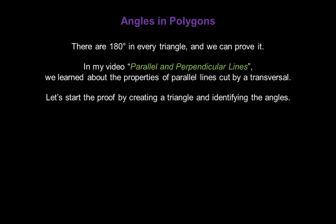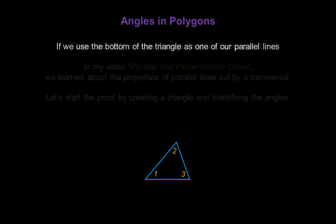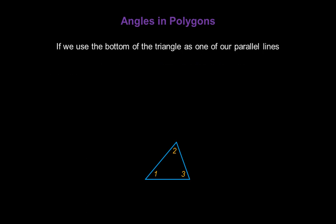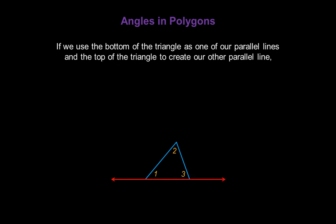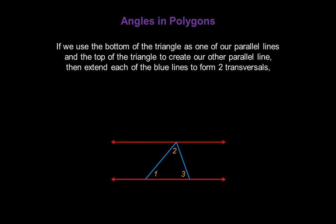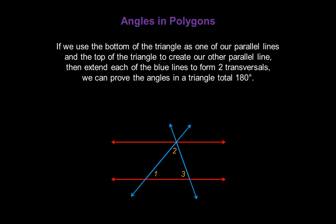Let's start our proof by creating a triangle and identifying its angles: angle 1, 2, and 3. If we use the bottom of this triangle as one of our parallel lines and the top of the triangle to create our other parallel line, then extend each of the blue lines to form two transversals cutting those parallel lines, we can prove the angles in a triangle total 180 degrees.